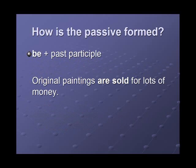How is the passive formed? We use 'be' plus the past participle. For example: original paintings are sold for lots of money. Here, the form of 'be' is 'are,' and the past participle of 'sell' is 'sold' — are sold.